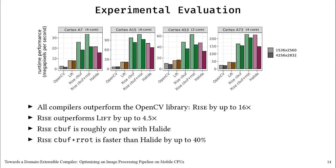Now that we have seen how optimizations are expressed in our system, what kind of performance do we get? This figure compares the runtime performance of different implementations in megapixels per second. So higher is better. On the top legend, you can see the four different ARM multicore CPUs that we evaluated. On the bottom, you can see different implementations: one with the OpenCV standard library, one with LIFT from which our work follows, two RISE implementations corresponding to the CBUF and CBUF plus RROT optimization strategies that we have seen, and finally, the HALIDE reference. On the right, you can also see that we use two different input sizes.